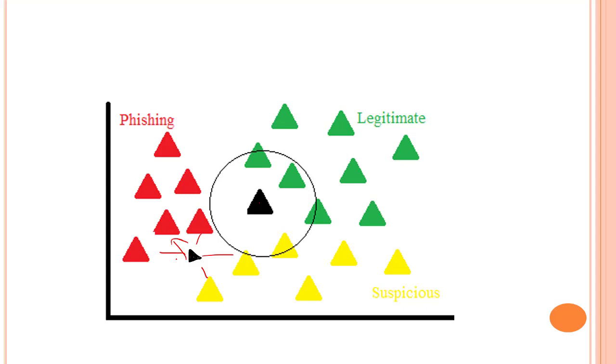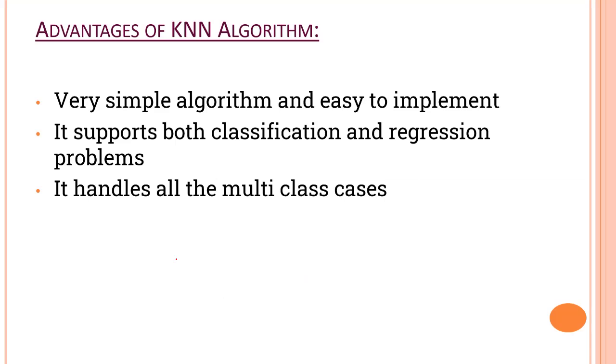Now let's look into the advantages and disadvantages. Advantages of KNN is it's a really simple algorithm, one of the simplest algorithms that we have. It supports both classification and regression problems. It also handles multi-class cases. It is robust when you have very noisy data. It can be more effective if the training data is large.